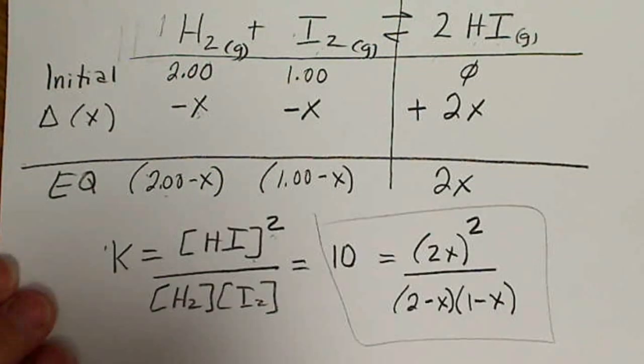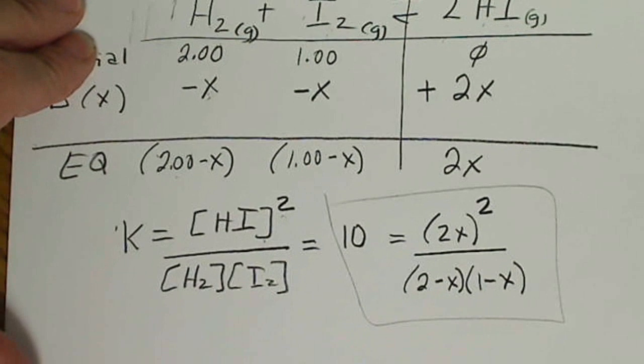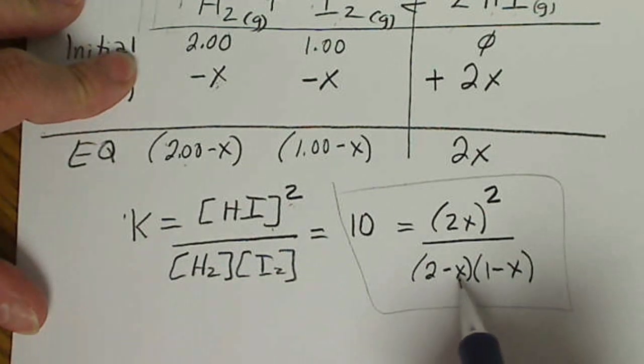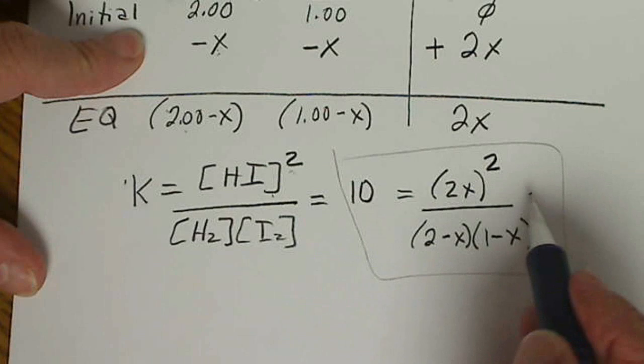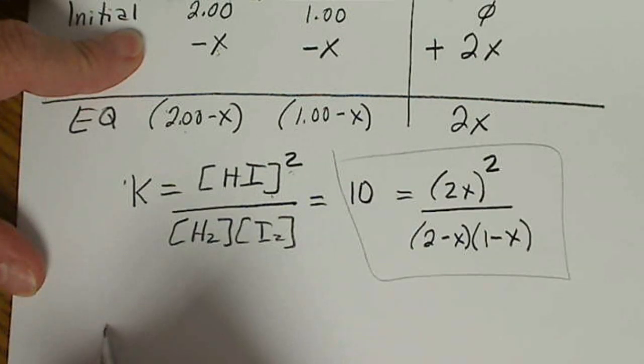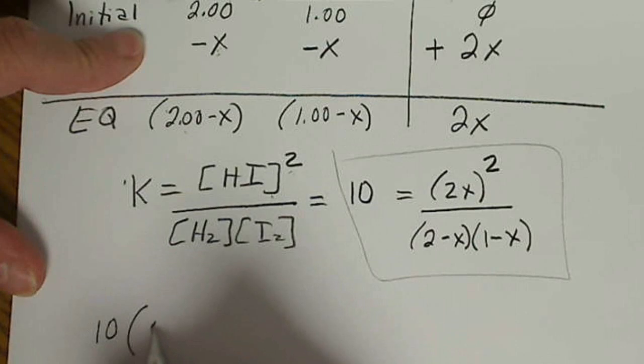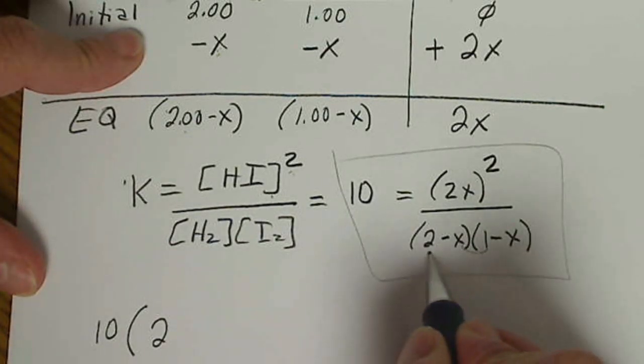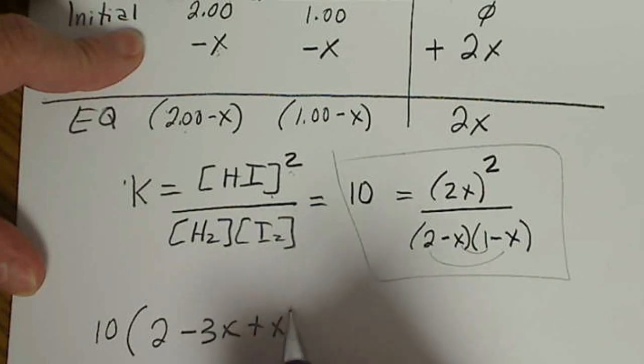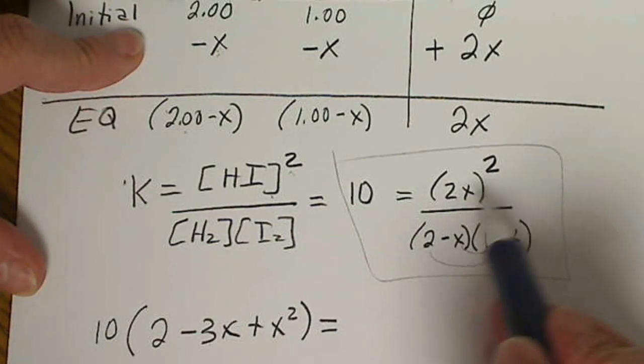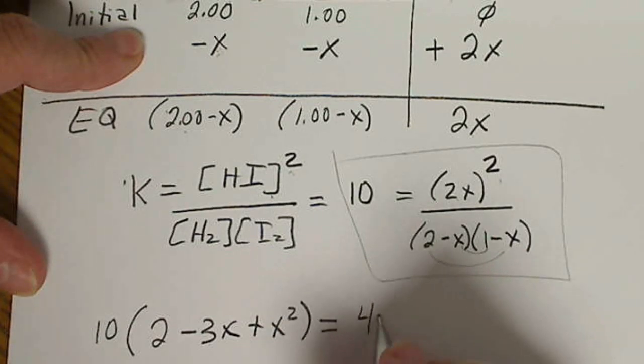So now this is going to end up turning into a quadratic equation. So I just have to do FOIL here. If I multiply both sides of the equation by this denominator, 10 times this will be 2 minus X minus 2X will be minus 3X plus X squared.